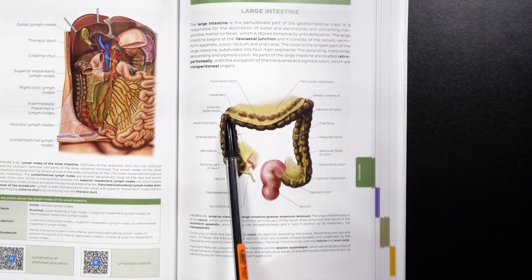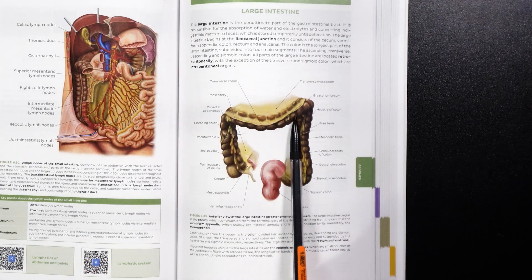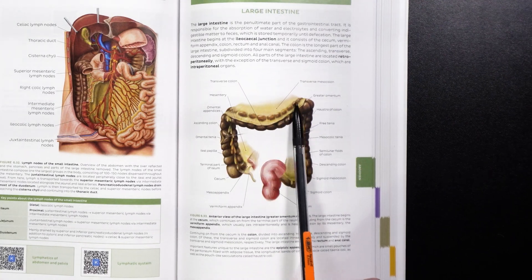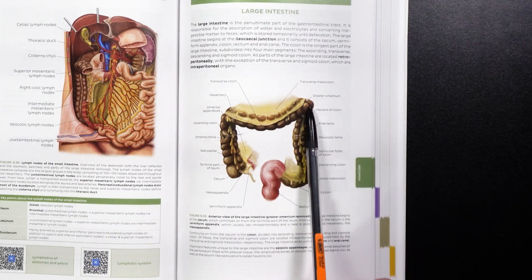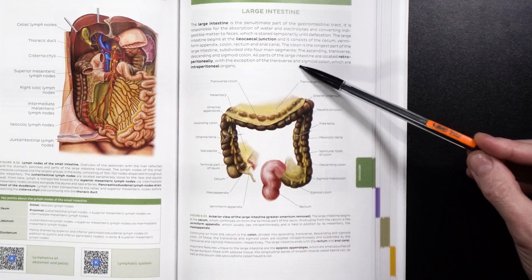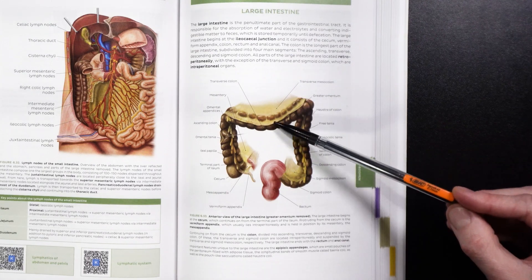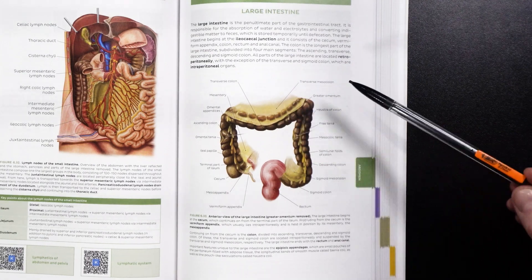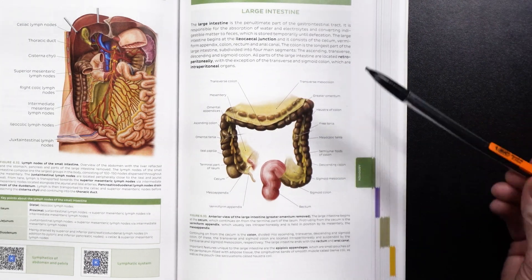So we are going from the right side of the body over to the left, and then we're making another turn. This time we would call this the splenic flexure, because the spleen would be right here. So we are turning into the descending colon.